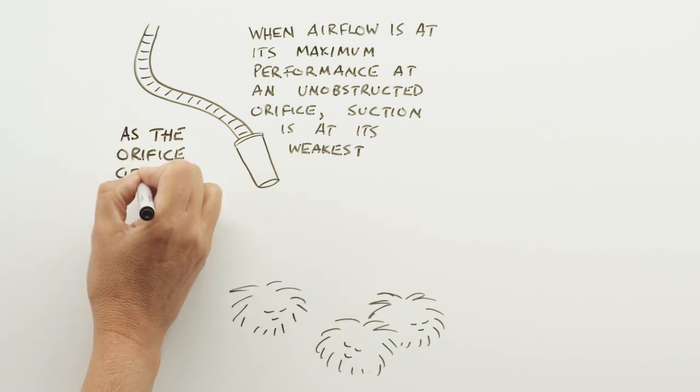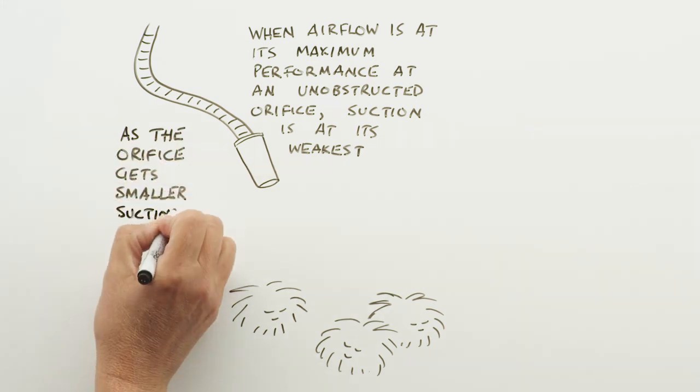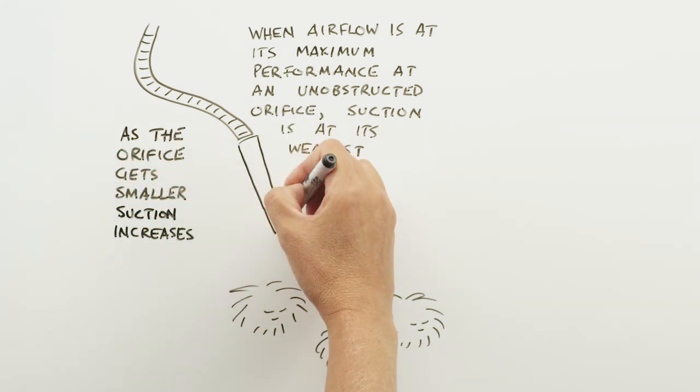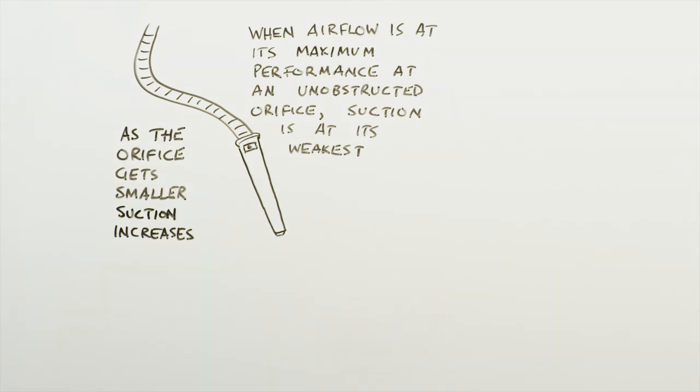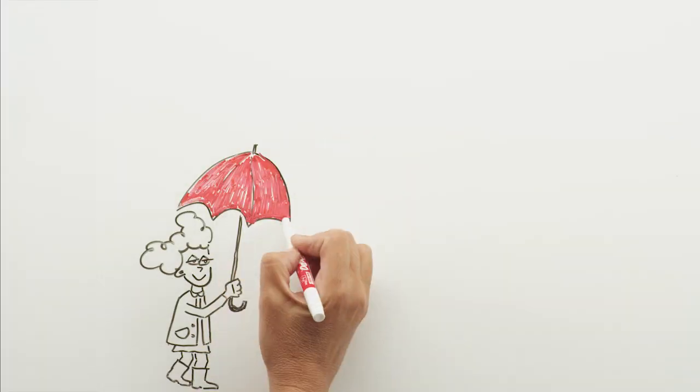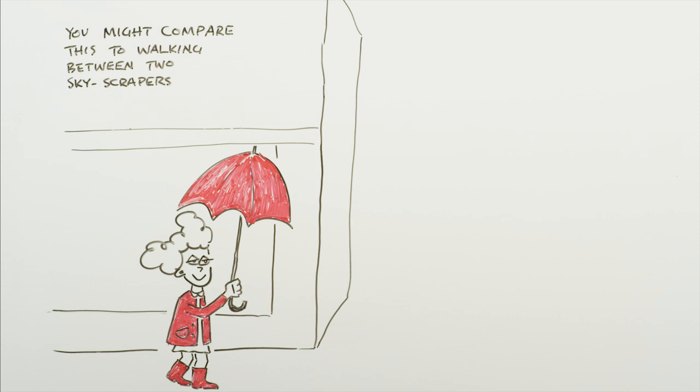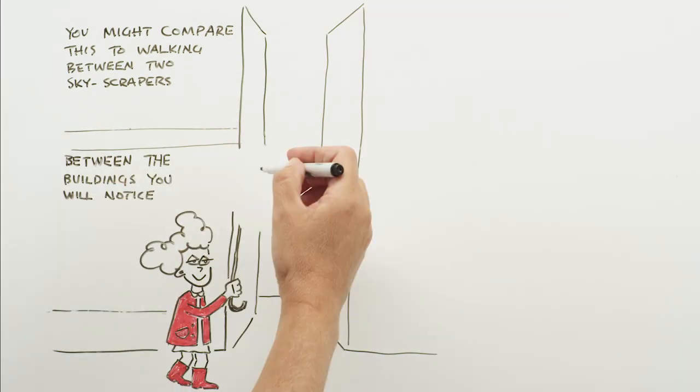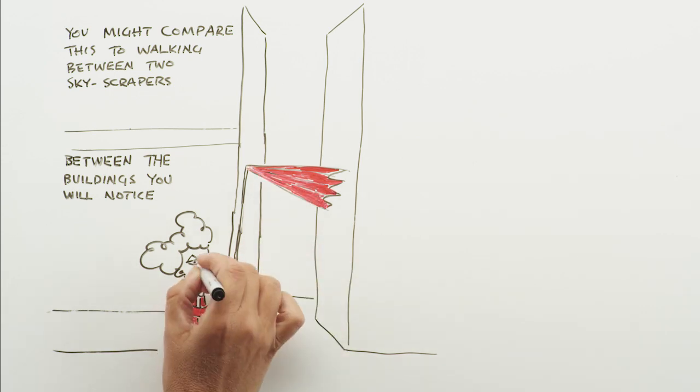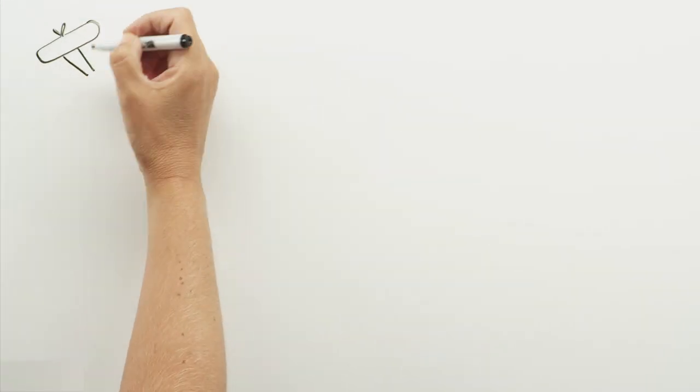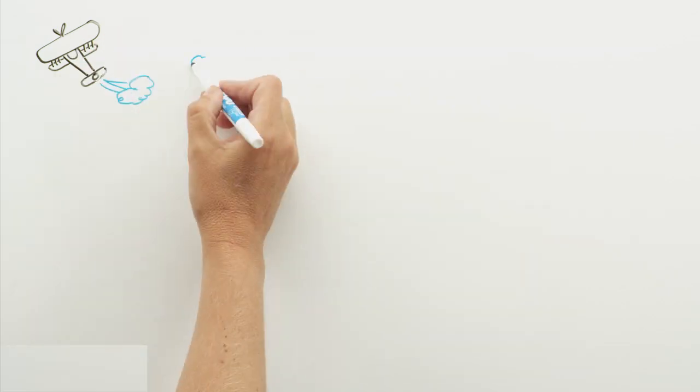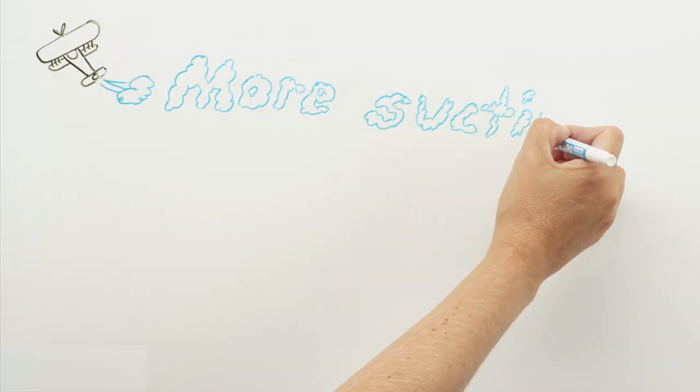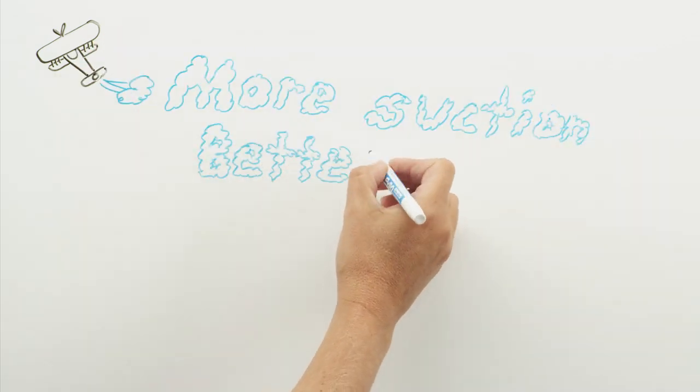However, as the orifice gets smaller, suction increases. You might compare this to walking between two city skyscrapers on an otherwise calm day. Between the buildings, you will notice a big increase in wind speed. What you need to know is that air flow and suction at the end of the hose work together to clean floors.